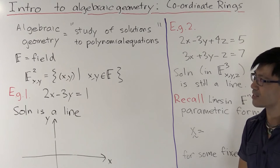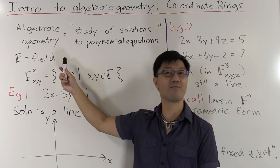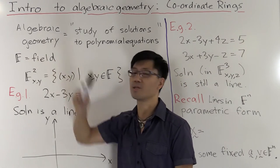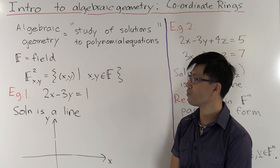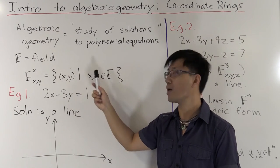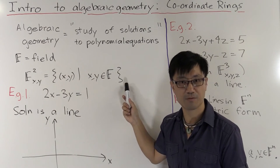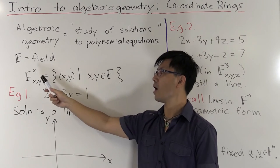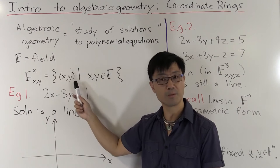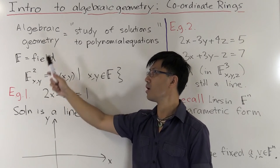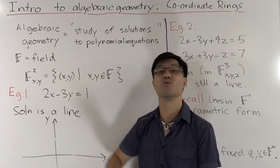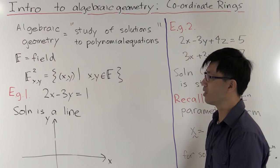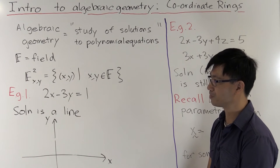Okay, so to set things up, what we'll do is we'll start with some field which I'll denote like this with the double barrel F, and we'll look at the set of all ordered pairs x, y where x and y range over the field F. So I'll denote the set of all these ordered pairs with F² and the subscript x and y just to remind ourselves that these are the coordinates that we use.